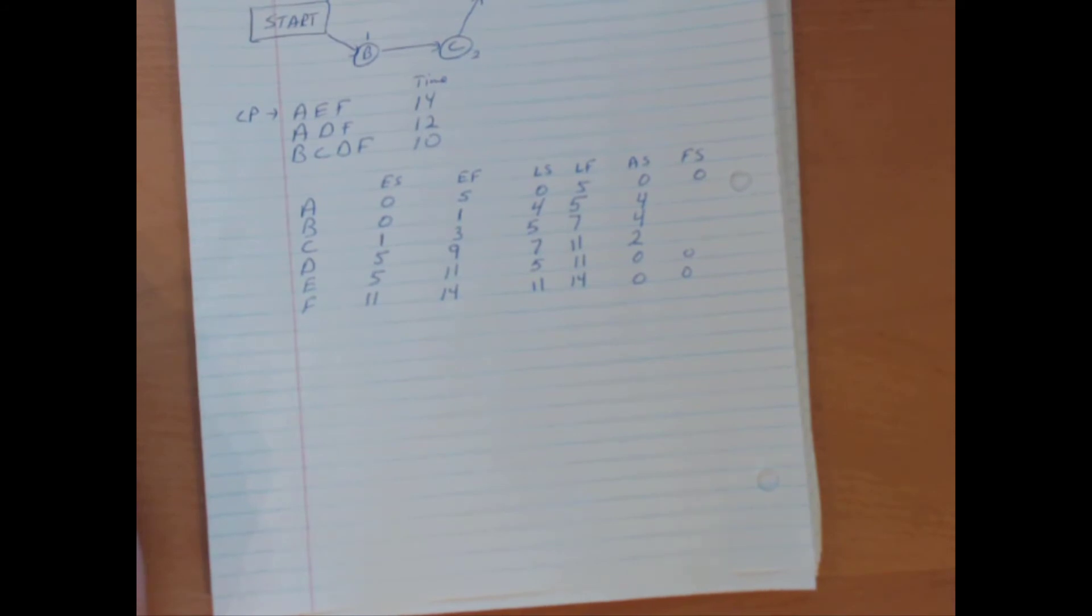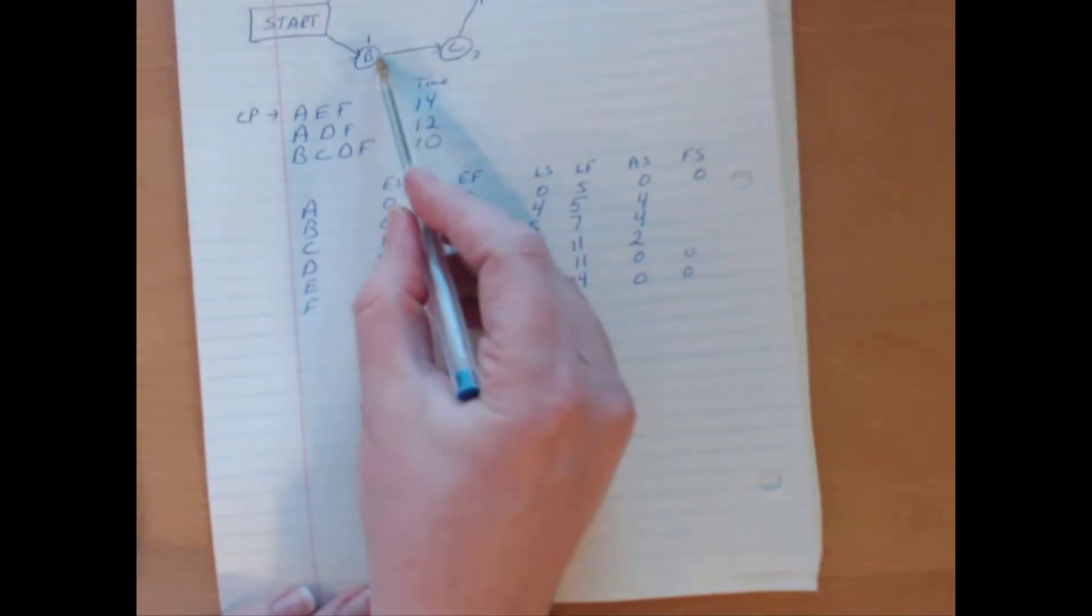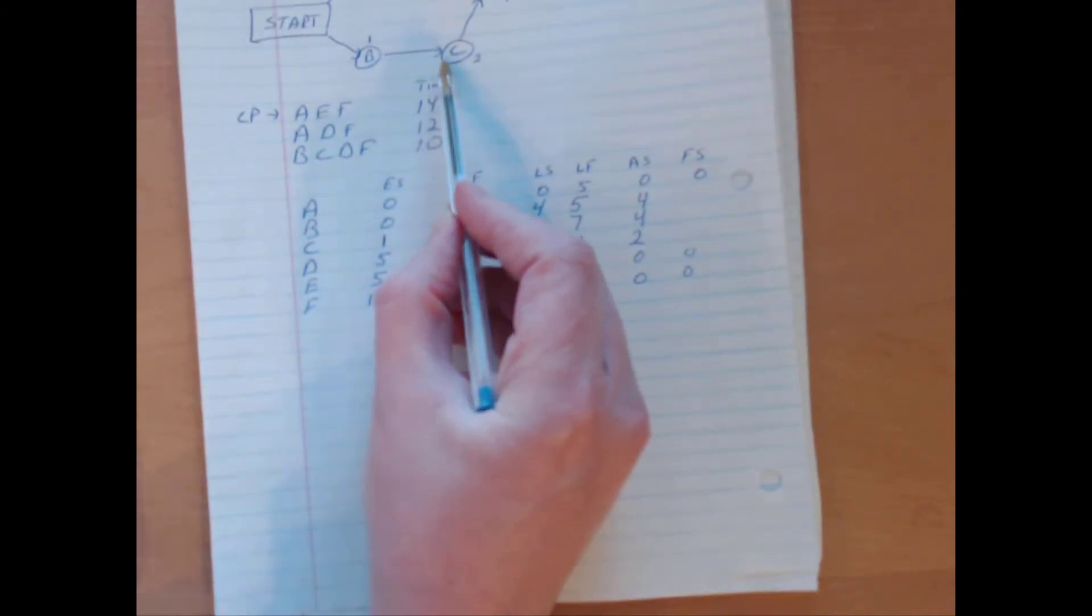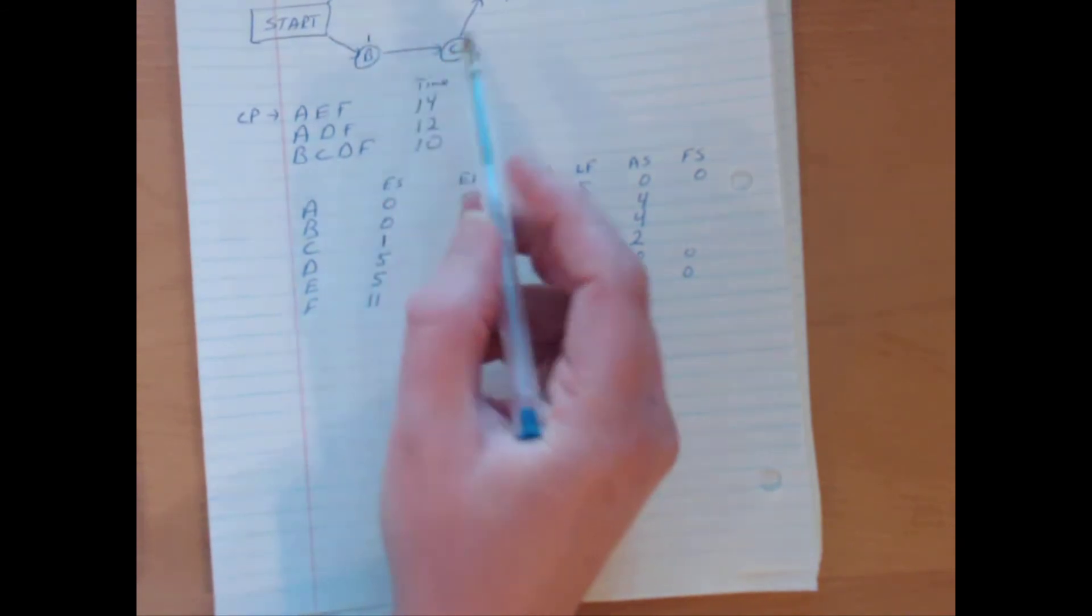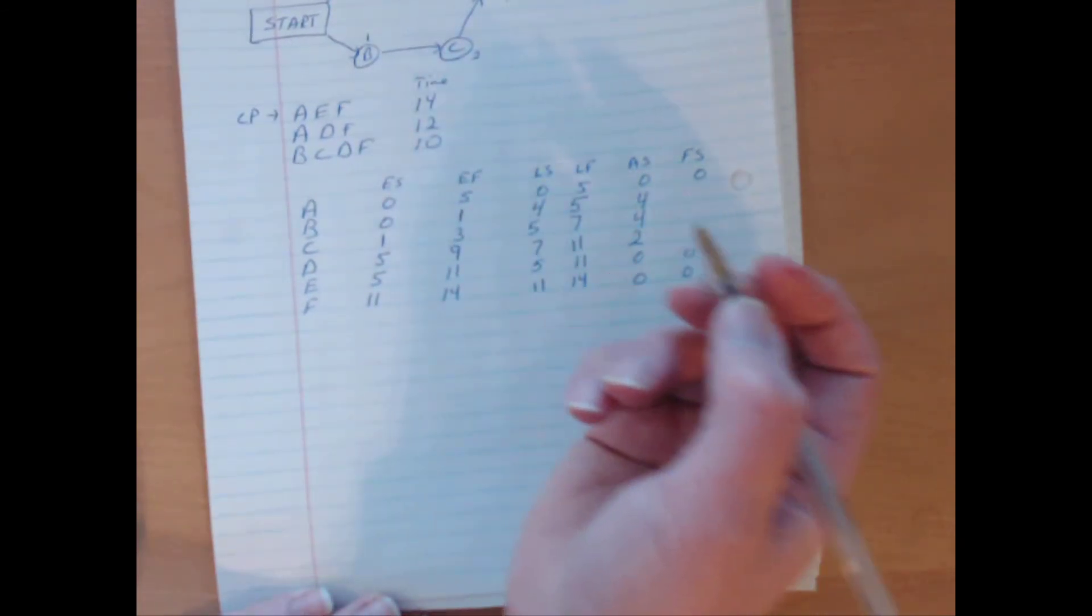Free slack, however, is a little bit more restrictive. Just because there's activity slack does not mean there has to be free slack. All that free slack means is that any delay in a given activity will delay the activity that follows it. So, for instance, let's look at activity B. Any delay in B, while the activity that follows B is C, any delays in B will result in a delay in C. So no free slack there. Even though there's activity slack, there is no free slack.